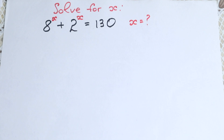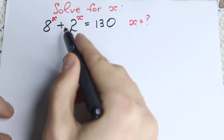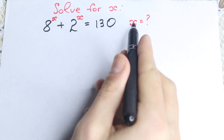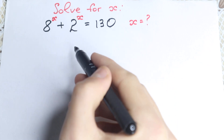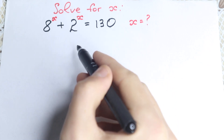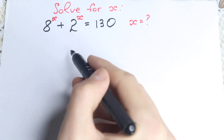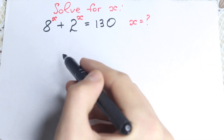Hello my friend, happy to see you here and welcome back to my math class. In this video we are going to solve this interesting exponential equation: 8 to the x plus 2 to the x equals 130, and we need to find x from this interesting exponential equation. So in this video we are going to solve it. I hope you will enjoy this video.